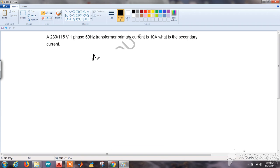We know that the turns ratio N1 by N2 is equal to E1 by E2 is equal to I2 by I1. See that this is the opposite of voltages.